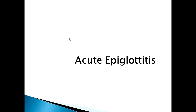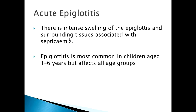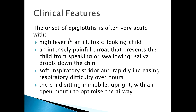Next is acute epiglottitis — a severe, life-threatening emergency due to the high risk of respiratory obstruction. It is caused by Haemophilus influenzae type b. In the UK, Pakistan, and many other countries, the introduction of universal Hib immunization in infancy has led to more than 99% reduction in the incidence of epiglottitis and other invasive Haemophilus influenzae type b infections. There is intense swelling of the epiglottis and surrounding tissues associated with septicemia. It is most common in children aged 1 to 6 years but affects all age groups, with often a very acute onset and high-grade fever.